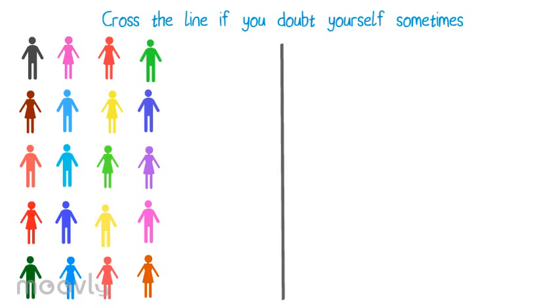After a couple of questions, they can get a bit more personal. An example for when the group is familiar with the exercise is: cross the line if you doubt yourself sometimes. It's very likely people won't cross the line immediately since the question is quite personal. It's important to be patient before asking the participants that cross the line questions.